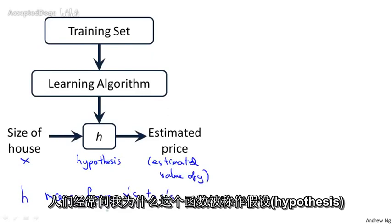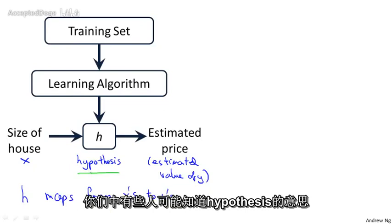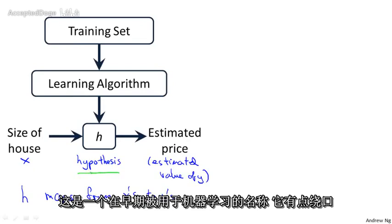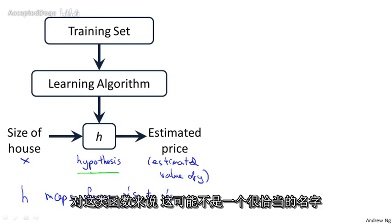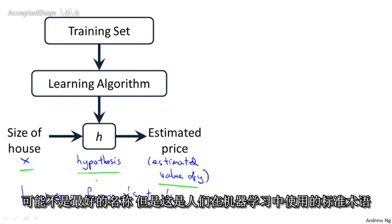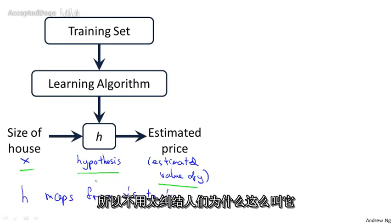People often ask why this function is called a hypothesis. It turns out that in machine learning, this is a name that was used in the early days of machine learning and it kind of stuck — it's maybe not a great name for a function mapping from sizes of houses to predictions. But this is the standard terminology that people use in machine learning now, so don't worry too much about why people call it that.